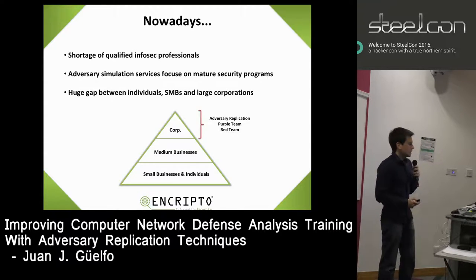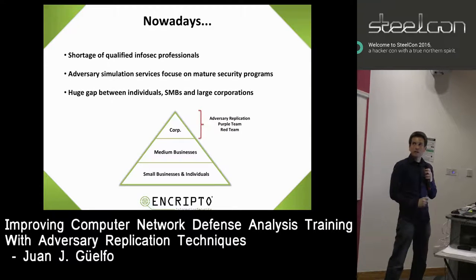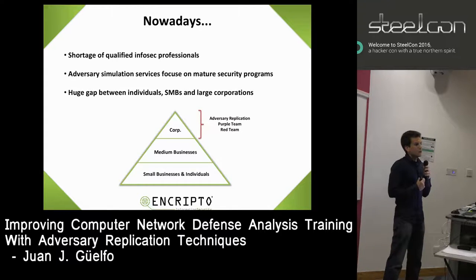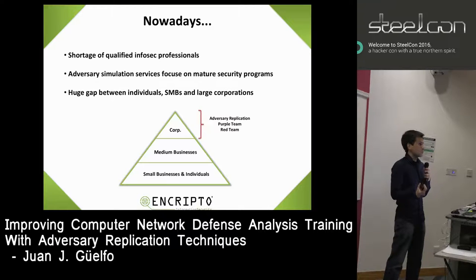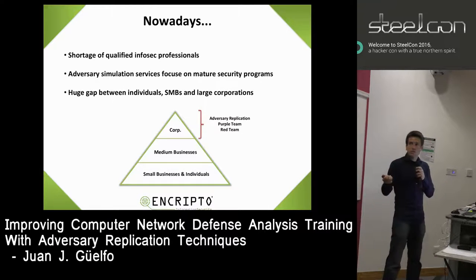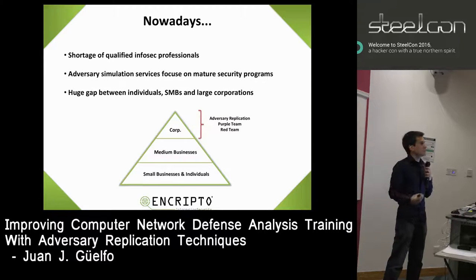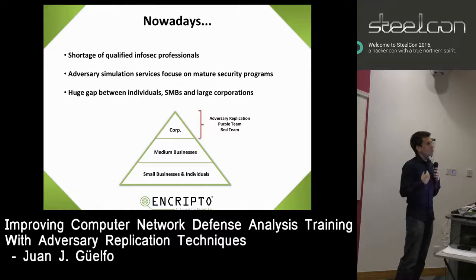If we look at the offensive infosec industry — focusing on adversary replication, simulation services, threat team, pen testing, and so on — organizations at the top of the pyramid are the ones that usually get the most benefit. Basically because they already have a blue team in place, so at the same time as you are testing the security of a company, you are also training and testing the incident response of the blue team. However, this does not mean that medium-sized businesses, training institutions, small businesses, or individuals don't have a need for detection or for improving their skills.